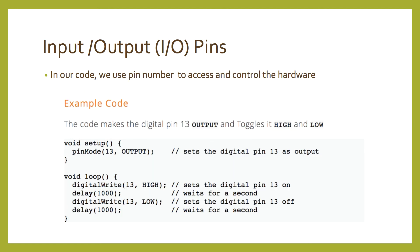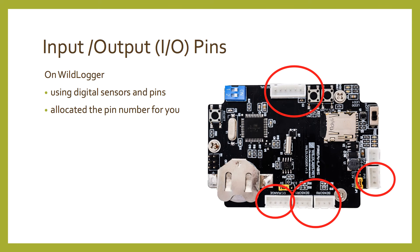In our code we use the pin number to access and control the hardware, and this is what we'll be using when we write our application. On the wild logger we've allocated the pin numbers for you. Sensor port zero uses analogue pin zero or A0; sensor port one uses analogue pin one or A1. Those pins can also be used to interface to digital devices, which we'll see with our temperature and humidity sensor. The PIR motion sensor port connects to digital pin three, which has the special circuitry of being an interrupt — we'll get into that later in the course.